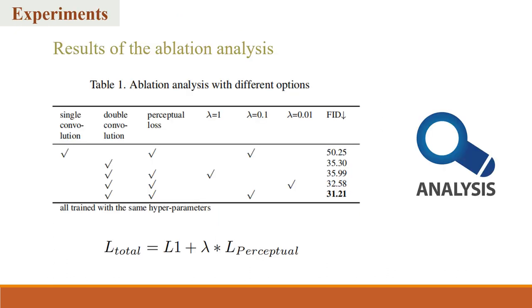We conducted ablation experiments on the convolutional layers in the network, the perceptual loss, and the coefficients. The experimental results indicate that the network achieves the best performance when employing a dual-layer convolution and utilizing perceptual loss with a coefficient of 0.1.